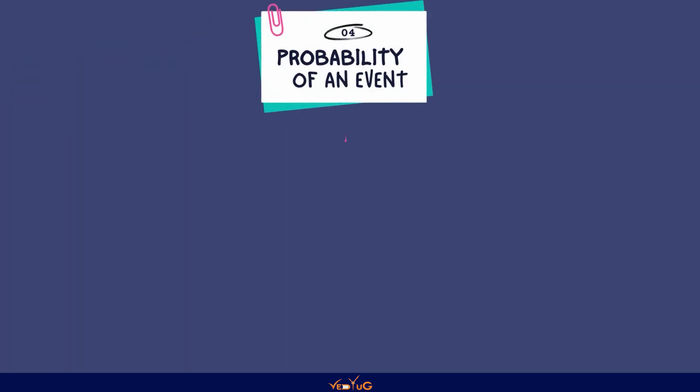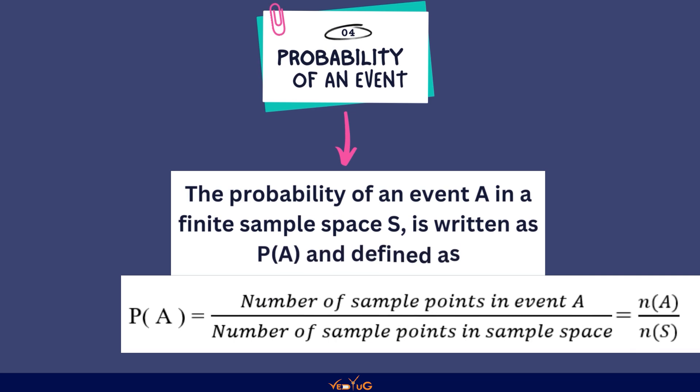Now, let us move on to the probability of an event. ये एक important topic है और इसका definition है. The probability of an event A in a finite sample space S is written as P of A and defined as P of A equals to number of sample points in event A upon number of sample points in sample space, which is also equals to N of A upon N of S. ये था probability का definition और formula जो की काफी important है.